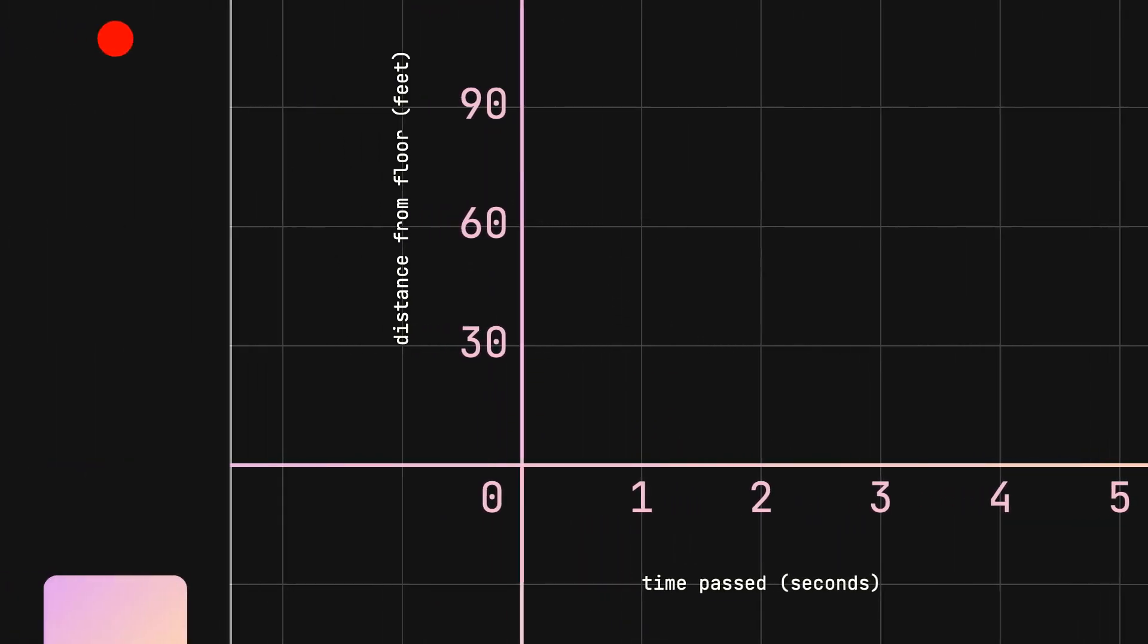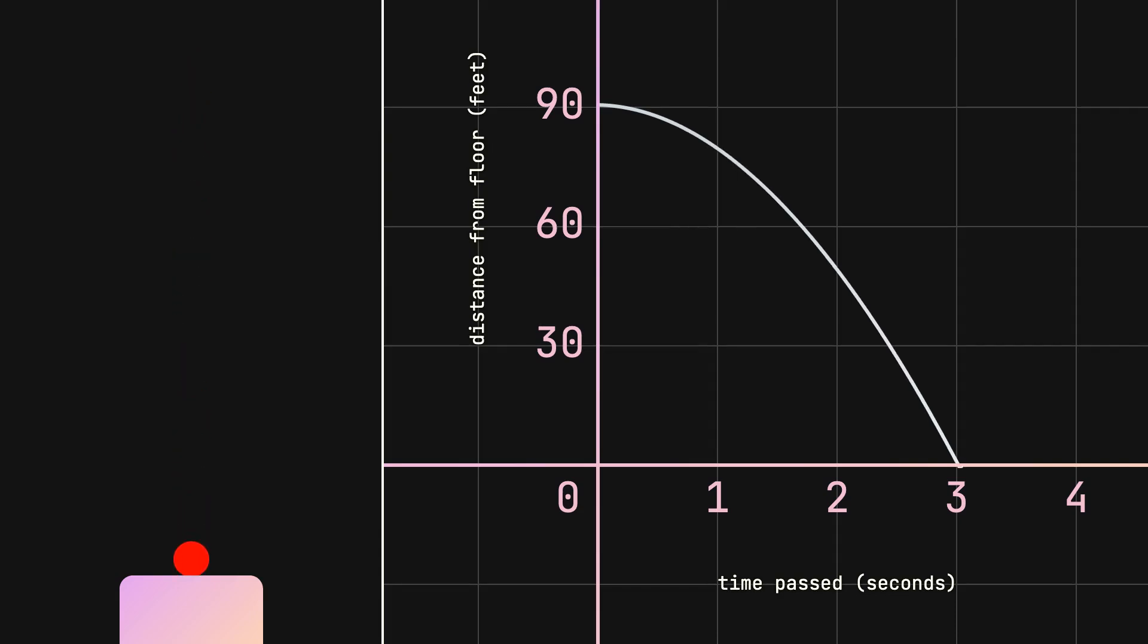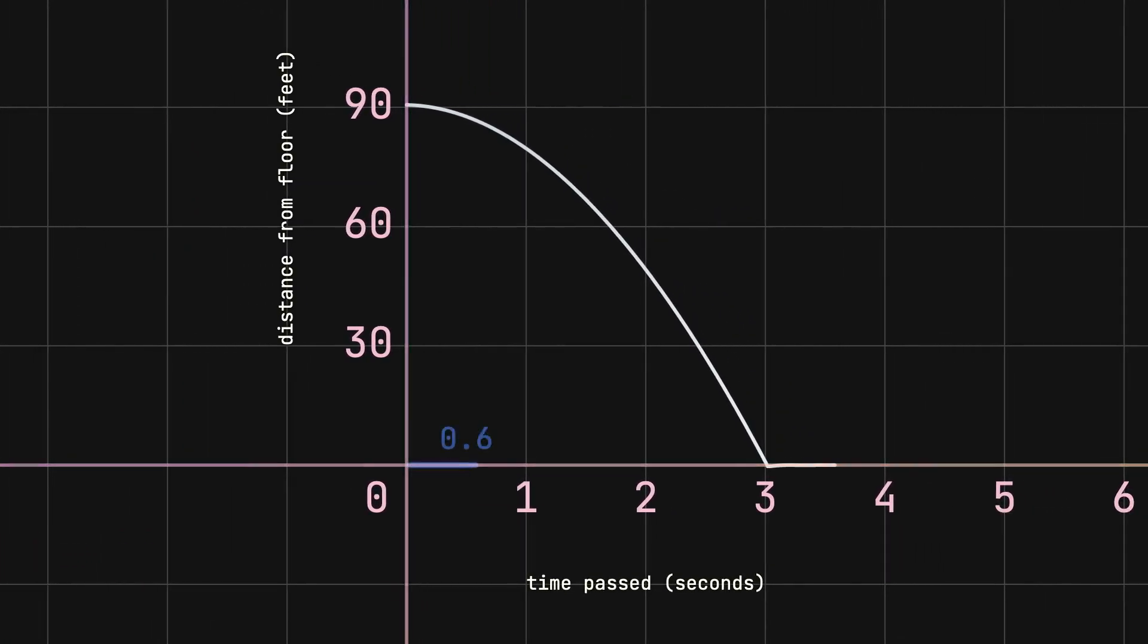Let's graph the ball's real fall again. After the first second here, the ball falls by 10 feet, but after another second, it falls by 30 feet, then 50 feet after another second.